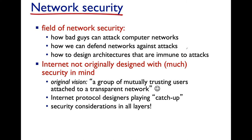The original vision for the Internet was a group of mutually trusting users attached to a transparent network. Internet protocol designers are now playing catch-up, trying to add security considerations to all the layers. As you saw from the Wireshark assignment — Project 1 — when you access certain secure websites, you saw HTTPS in the URL. HTTPS uses transport layer security, and it was added by encrypting all of the HTTP message data from the application layer and encrypting it in the transport layer before sending it across the wire. Every modern system must be designed with security in mind.